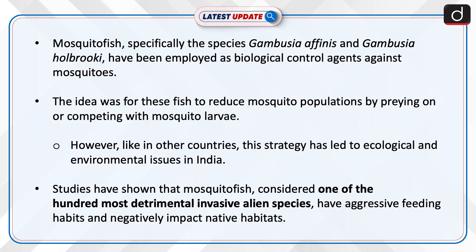Mosquito fish, specifically the species Gambusia affinis and Gambusia holbrookii, have been employed as biological control agents against mosquitoes. The idea was for these fish to reduce mosquito populations by preying on or competing with mosquito larvae.